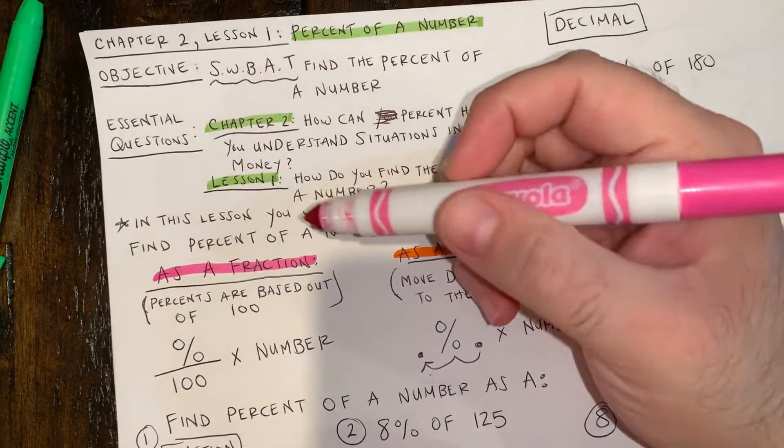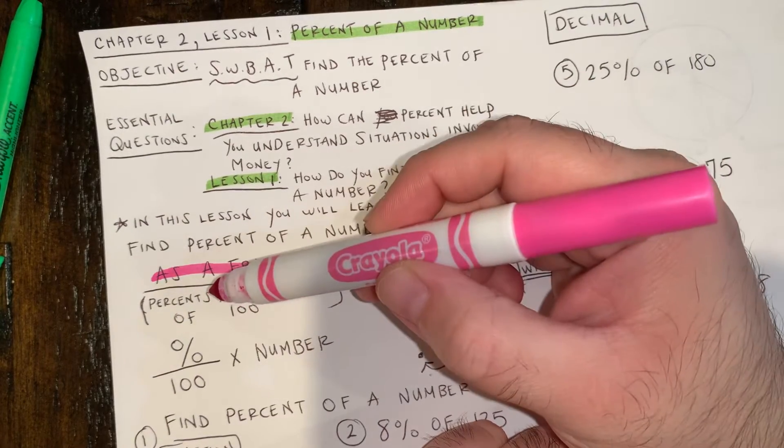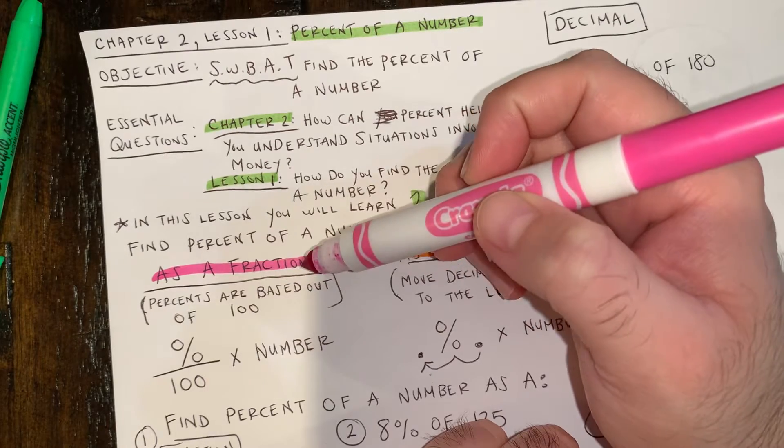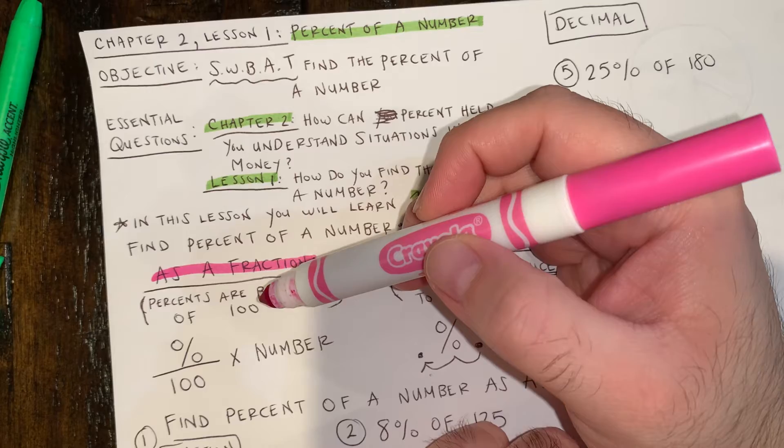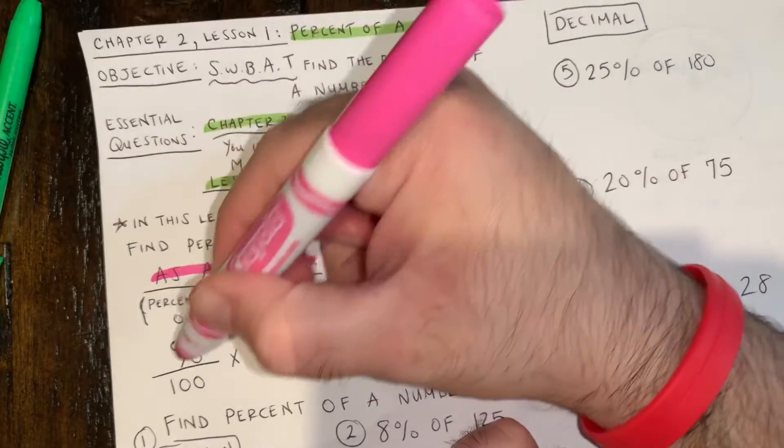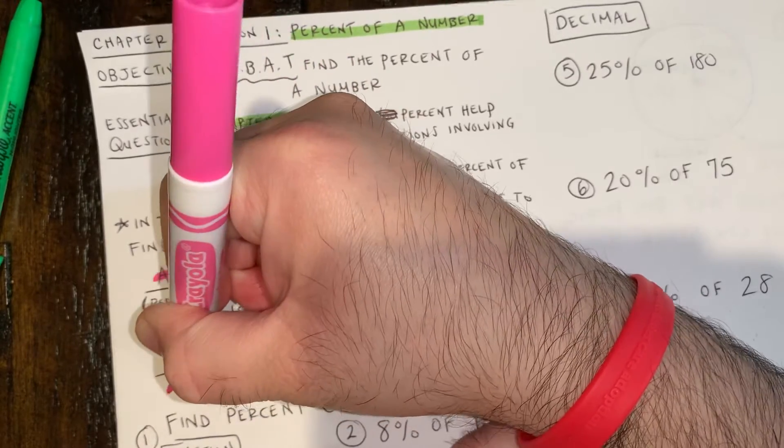So when we're dealing with percents as a fraction, you're going to be converting. You need to know that percents are numbers based out of 100. It's always based out of 100. What that means is that you're going to put your percent and you're going to always put it over 100.